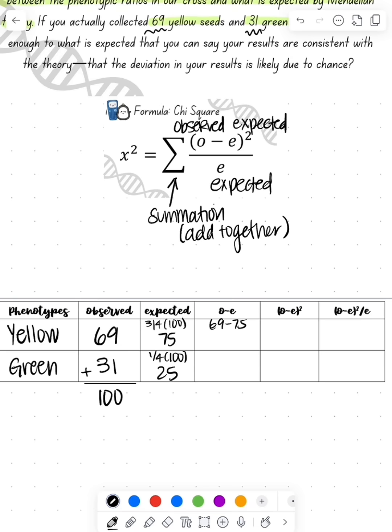Now I do observed minus expected, giving me -6 and 6. I then square that number, so that's 36. Then I do observed minus expected squared over expected: 36 divided by 75 and 36 divided by 25, giving me 0.48 and 1.44.